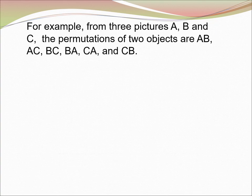For example, from three pictures A, B, and C, the permutations of two objects are AB, AC, BC, BA, CA, and CB.